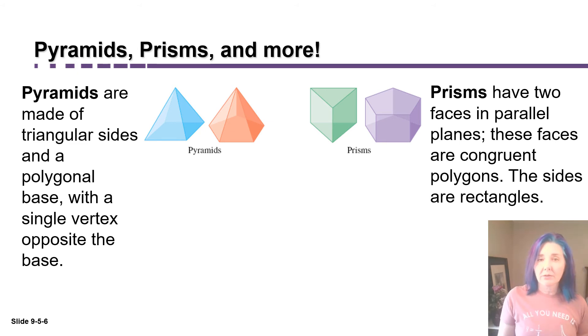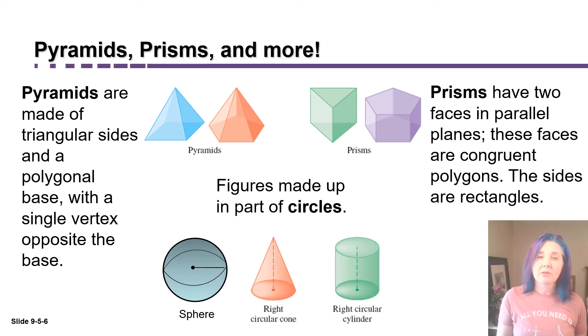Now related to these two categories are some shapes that we categorize differently because they involve circles. Figures made up in part of circles we kind of put in their own category. So those might include a sphere, a right circular cone, or a right circular cylinder.